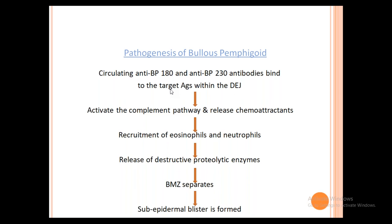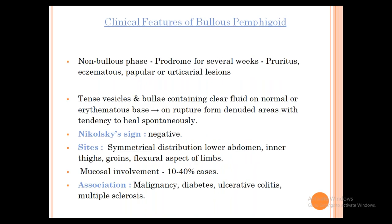Bullous Pemphigoid clinical features: common in the elderly. Non-bullous phase: patient complains of pruritus, eczema-type regions, urticarial and papular lesions. Bullous phase: tense vesicles and bullae containing clear fluid on a normal or erythematous skin base. They rupture with difficulty. Tense blisters form denuded areas with tendency to heal spontaneously (unlike Pemphigus where lesions spread on bulla rupture). Nikolsky sign is negative. Common sites: lower abdomen, inner thighs, groins, flexural areas, and limbs.